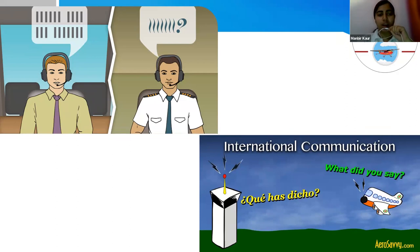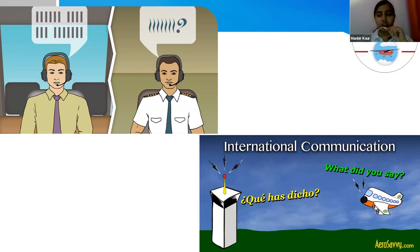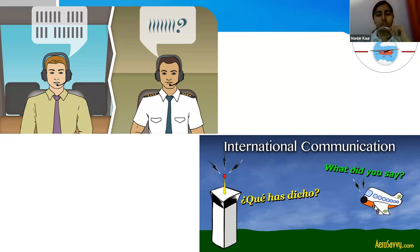With international flights all over the world, different regions and countries have different languages and accents. As discussed in the last session, English is the aviation language — it is the international language and is adopted everywhere. It is really necessary to have a single common language to reduce this communication barrier. If we don't have any common language, how would people at the international level communicate with each other?